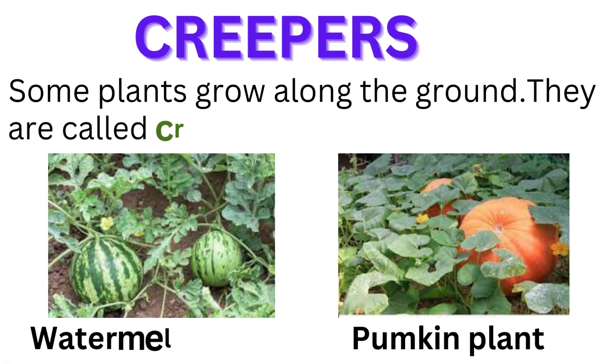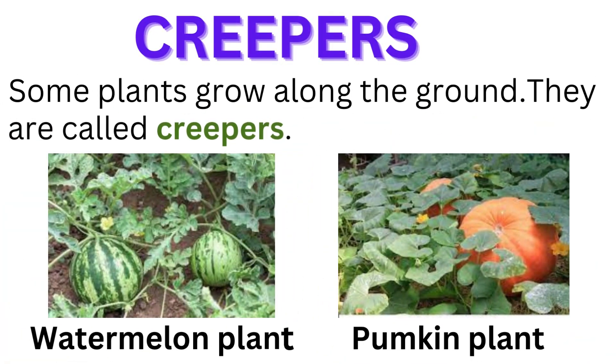Creepers. Some plants grow along the ground. They are called creepers. Examples include watermelon plant and pumpkin plant.